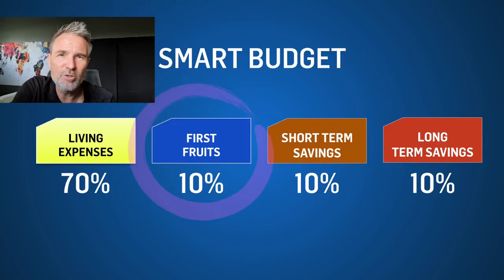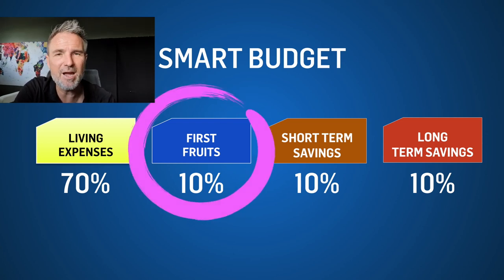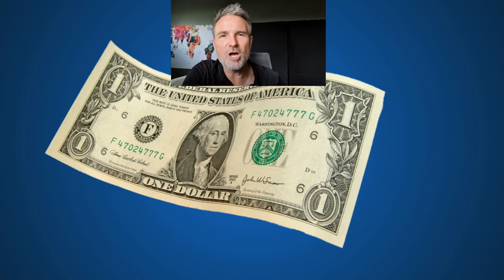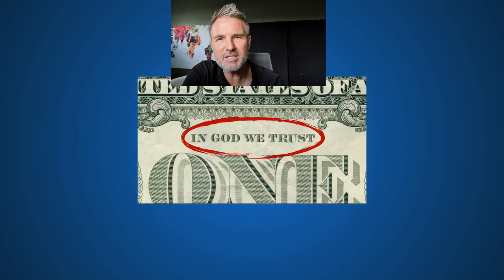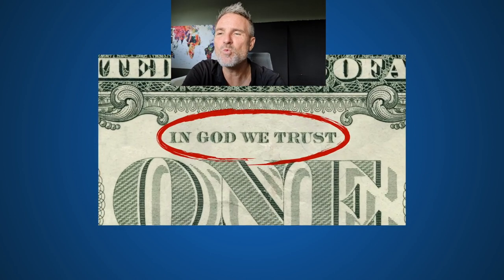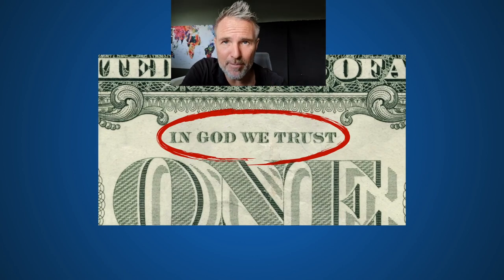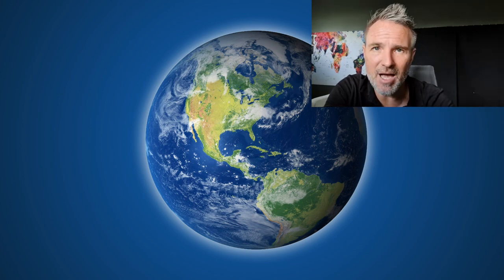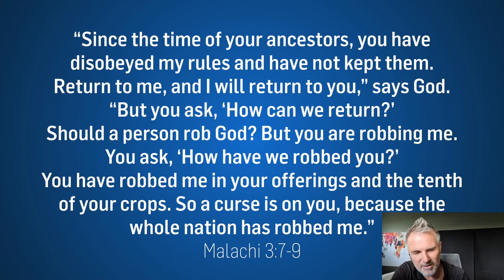Today we will focus on what 'first fruits' means. Let's look at the dollar bill — on the back it says 'In God We Trust.' This means you should not trust in money but in God. God is the creator of heaven and earth. Everything belongs to him. He created you and me, gave us skills, gave us time, gave us the ability to manage money.